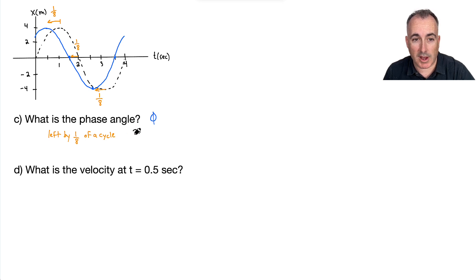So a whole cycle of 2π shifted to the left by 1 over 8 is going to be 2π over 8. What's 2π divided by 8? Well, 2 over 8 is 1 over 4, so it's going to be π over 4. Therefore, that's my answer. My phase angle is just going to be π over 4, and the units we use for this are radians. That's how we figure out from a fraction of a cycle to radians.